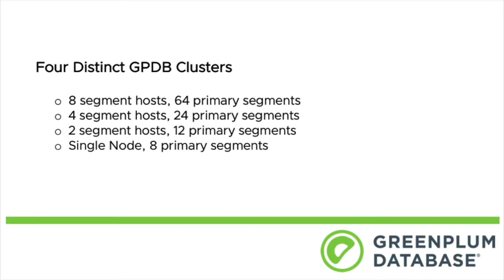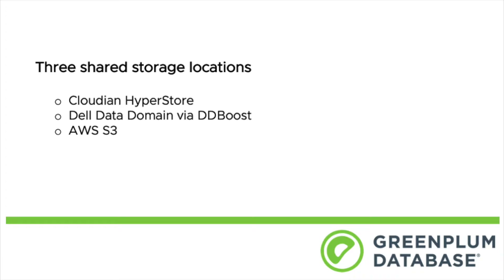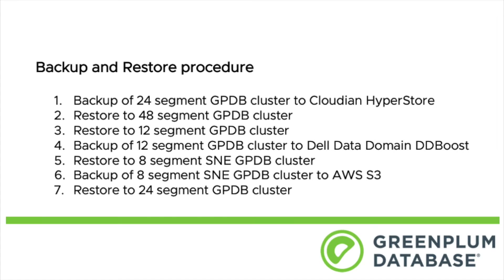This demo will use four distinct Greenplum clusters: a 64-segment, a 24-segment, a 12-segment, and an 8-segment cluster. We'll be backing up and restoring from three distinct storage locations: Cloudian Hyperstore, Dell Data Domain, and AWS S3. We will run through seven scenarios using different sized Greenplum clusters as well as different storage locations.